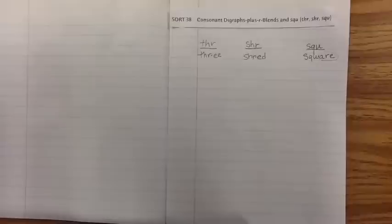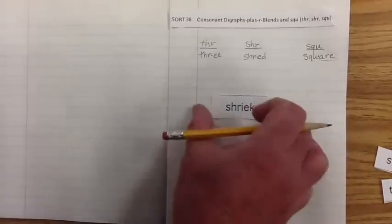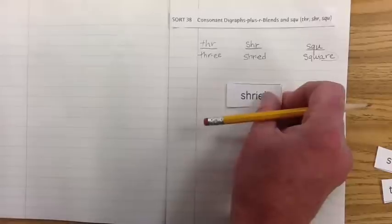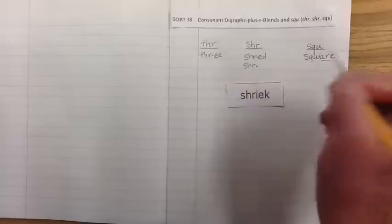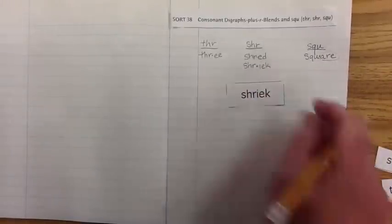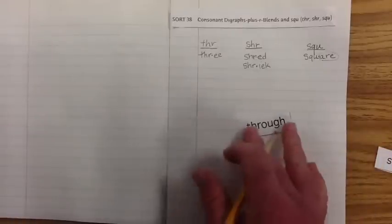Let's do one more row, one more word under each exemplar before we say goodbye. All right, let's take a look at shriek. It's not going to go under the THR or the SQU. It's going to go under the SHR. Let's write shriek. Shre, eek. Shriek. Can you guys say that? Shriek.